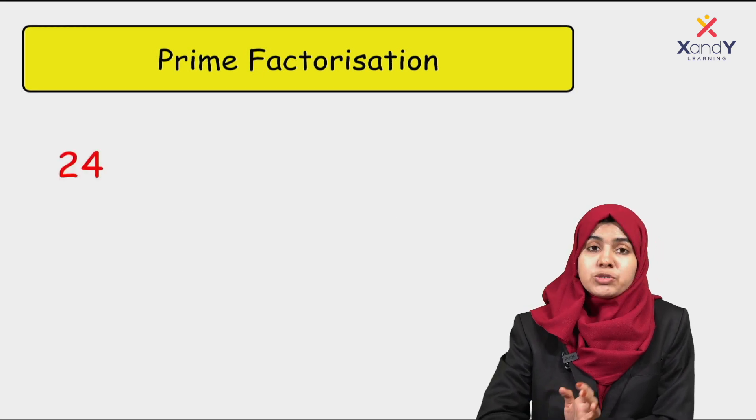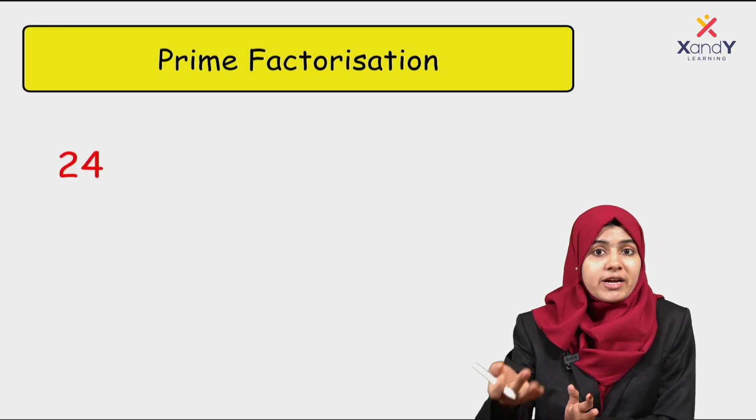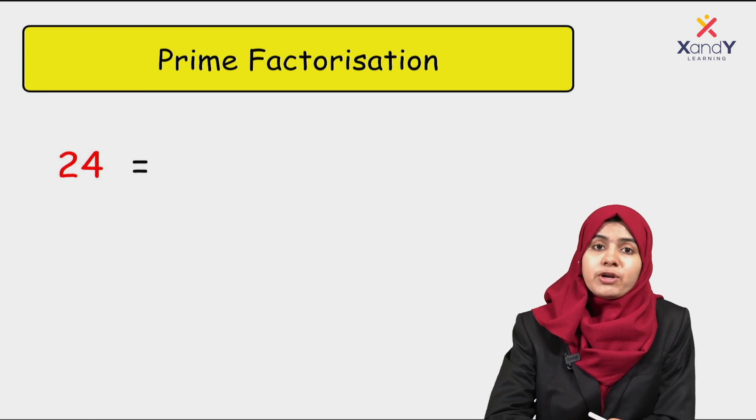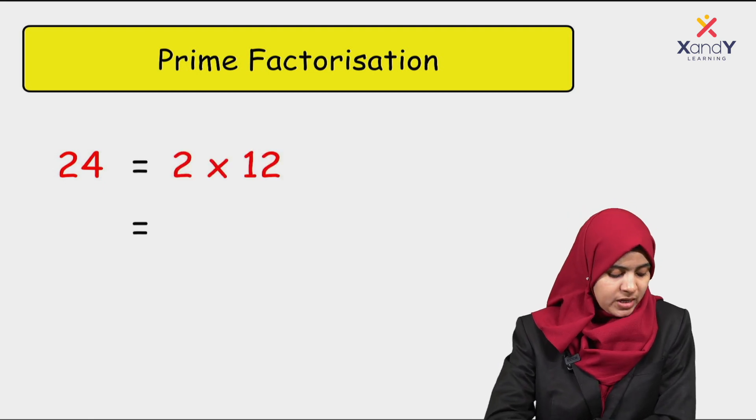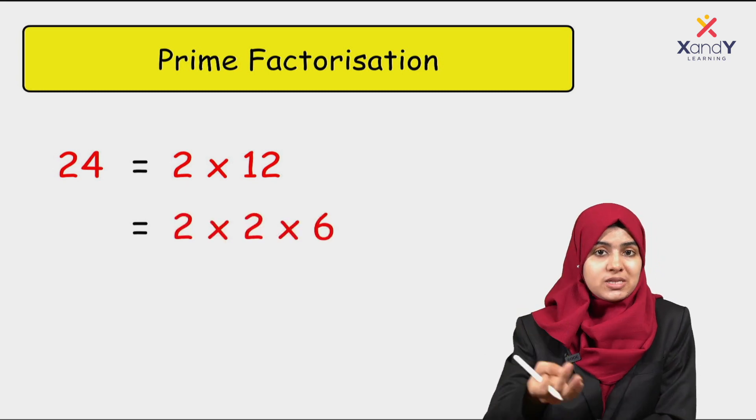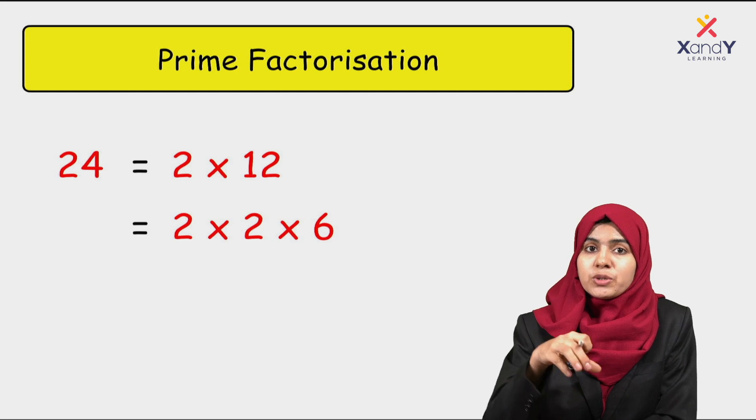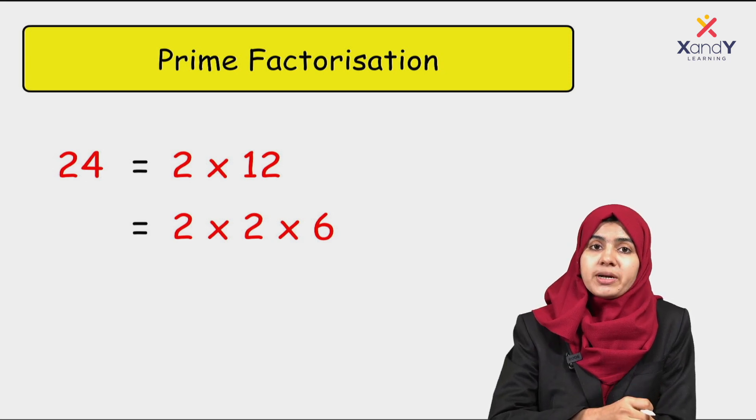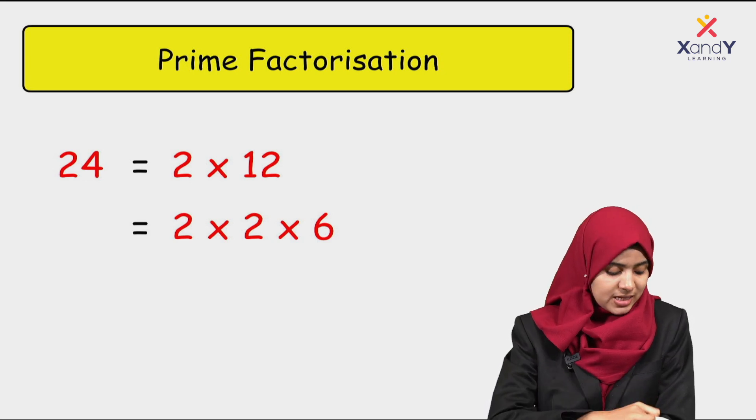So here we use the prime factorization method. 24 is 2 times 12. Again, we are breaking down 12 into 2 times 6. So 24 is 2 times 2 times 6.